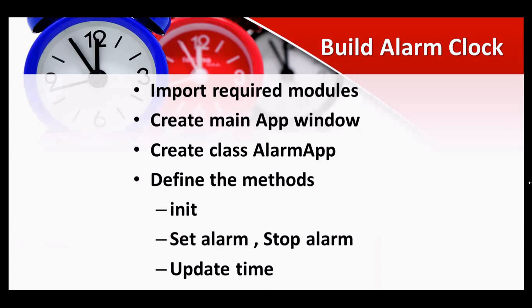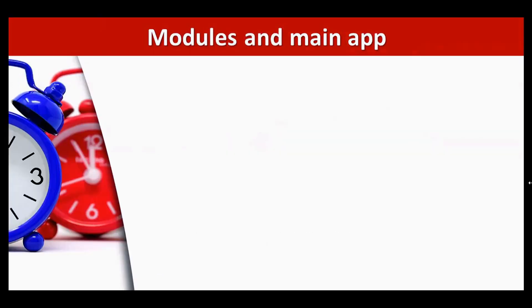Let us see the steps for building an alarm clock. First we need to import the required modules, then we will be creating a main application window. I'm going to create a class called AlarmApp, and inside the class we have four methods: init method, setting the alarm, stopping the alarm, and one more method called update time.